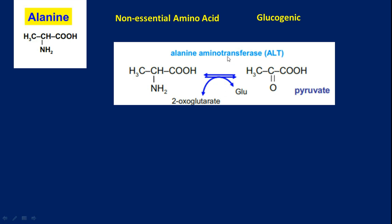These transferase enzymes transfer the amino group from an alpha-keto amino acid onto alpha-ketoglutarate, so that glutamic acid is generated. From glutamic acid, glutamate dehydrogenase will regenerate 2-ketoglutarate. In this way, alanine can be converted to pyruvate directly.